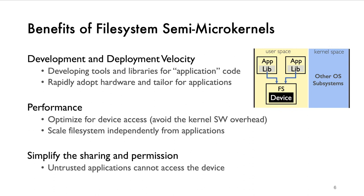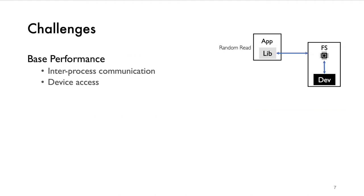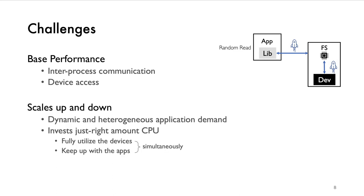Compared with high-performance library-based approaches, a file system semi-microkernel avoids the complexity from exporting devices to untrusted applications. Building a high-performance file system semi-microkernel has several challenges. First, base performance: two techniques are practically critical — efficient inter-process communication between the application and the file system process, and a well-optimized device access.